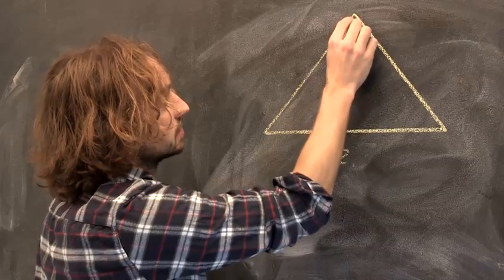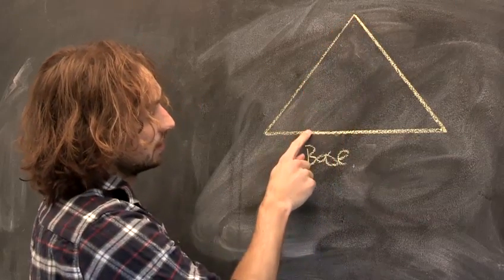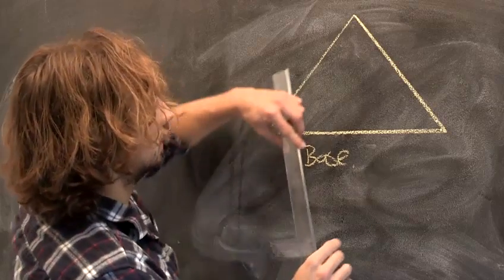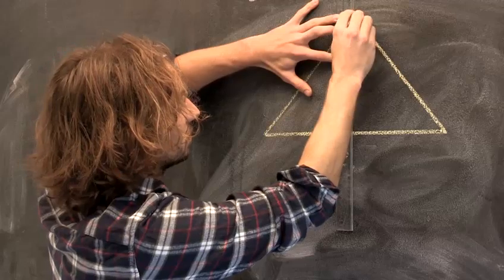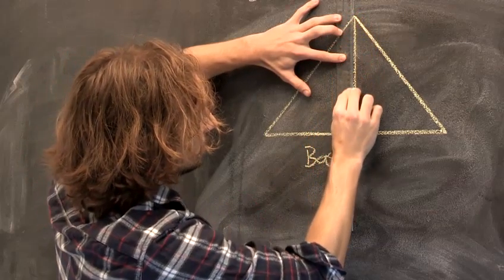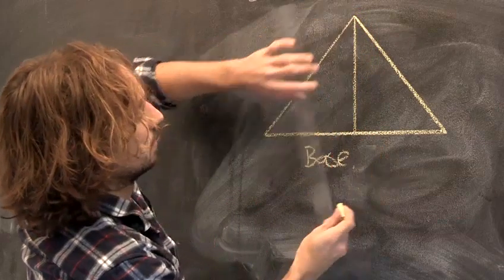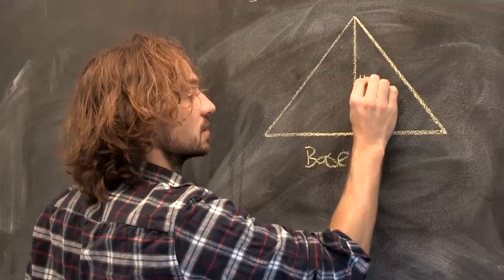So it is not, for instance, the line between here and here. That's not the perpendicular height. The perpendicular height is the line that's perpendicular to this one that reaches to the height of the triangle. So it's that height there. That represents the height of the triangle.